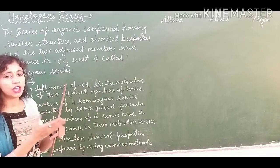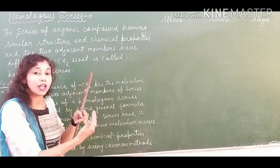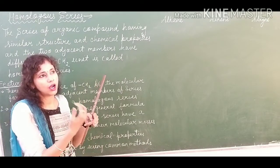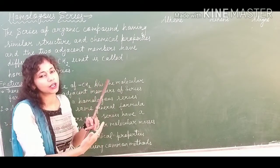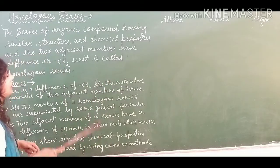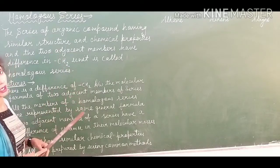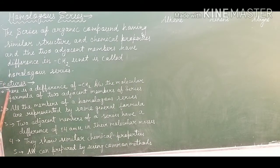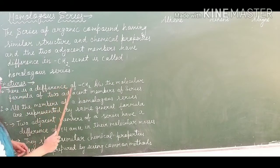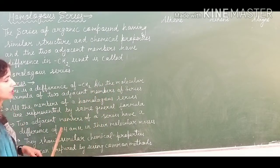Their structure and their chemical properties will be similar, but two adjacent members — you can say they are neighboring members — are to be differed by a CH2 unit in the molecular formula. If you are making the homologous series, all members differ by a CH2 unit. Now let's focus on the features. The first feature I have written: there is a difference of CH2 between the molecular formula of two adjacent members of the series.